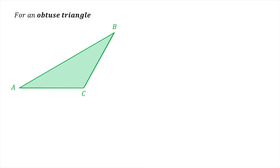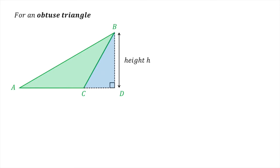We will now consider an obtuse triangle ABC. Just like the acute triangle, it is not so easy to see that the same area formula also applies to an obtuse triangle. To see why this is so, we will form another triangle BCD, which is a right triangle. There are now three triangles: triangle ABD, ABC, and BCD. Triangle ABC is the triangle whose area formula we want to derive. The key is to notice that two of the three triangles — triangle ABD and BCD — are right triangles, and all three triangles have the same height h.